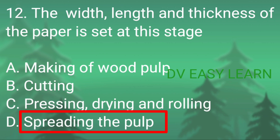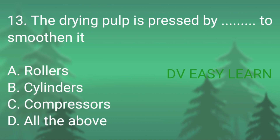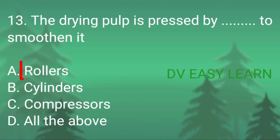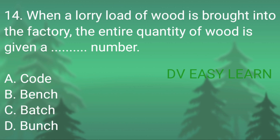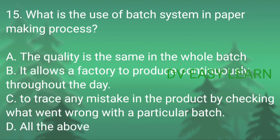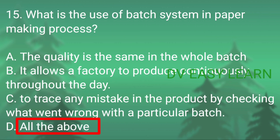Correct answer: spreading the pulp. Question number 13: the drying pulp is pressed by dash to smoothen it — correct answer: rollers. Question number 14: when a lorry load of wood is brought into the factory, the entire quantity of wood is given a dash number — correct answer: batch. Question number 15: what is the use of batch system in paper making process — correct answer: all the above.